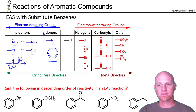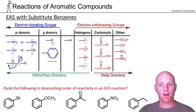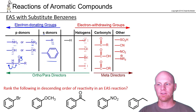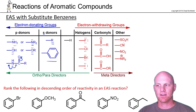Recognize your donating groups and know that they're activating in these EAS reactions. Then you've got your electron withdrawing groups, and your halogens are the least withdrawing, and then any kind of carbonyl, and then after that you've got a whole host of different groups.